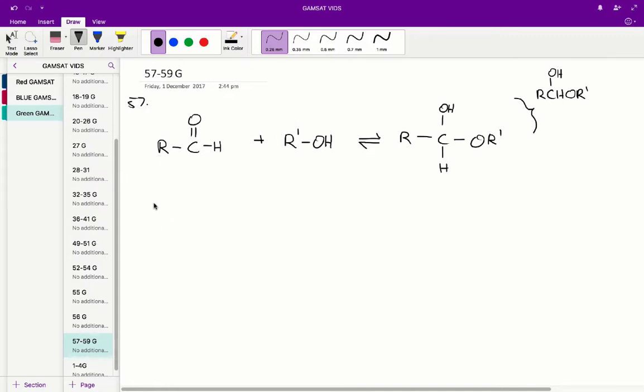We know that propanol and ethanol are two reactants. So propanol looks like this. If we just convert it into its structural form.